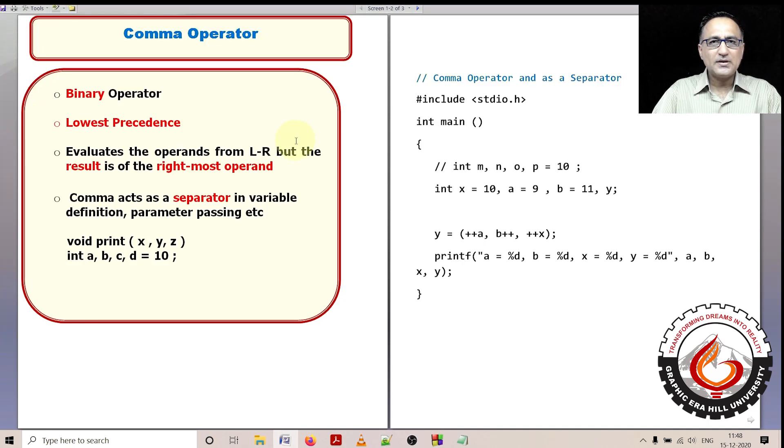I am now going to talk about the last operator in the precedence table, the one which has the lowest precedence, called the comma operator. The comma operator is a binary operator, meaning it needs two operands. As I have already mentioned, the comma operator has the lowest precedence of any operator in C.